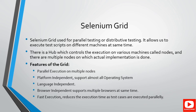Selenium Grid is used for distributive testing. It allows executing test scripts on different machines at the same time using a concept called hub and node. Nodes are different machines on different operating systems, all interconnected with the hub. Selenium Grid features include parallel execution on multiple nodes, platform independence — connecting from Ubuntu, Linux, Mac, or Windows — support for multiple browsers like Google Chrome, Firefox, IE, and Safari, and language independence supporting Java, C#, Python, etc.